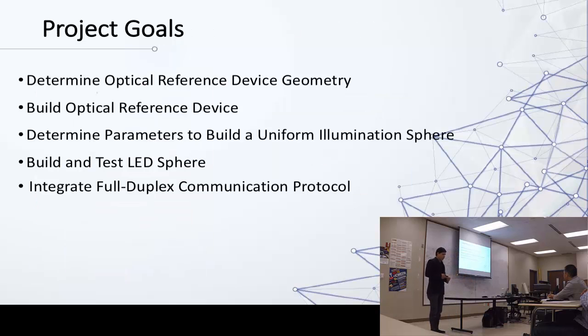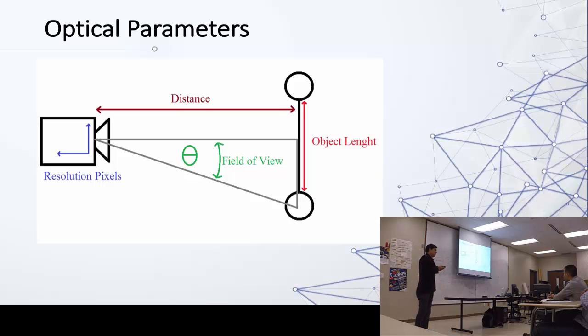So my project goals was to determine the device reference geometry, also build the optical reference device, now determine also the parameters to build a uniform LED sphere, test the sphere obviously, and integrate full duplex communication, meaning that to develop a protocol that could talk to the camera and the beacon and exchange information in real time. In order to measure anything with a camera, obviously you have to know the parameters. You have to know the object length, the distance of which you are from the object, and some intrinsic parameters for the camera, which are field of view and the resolution.